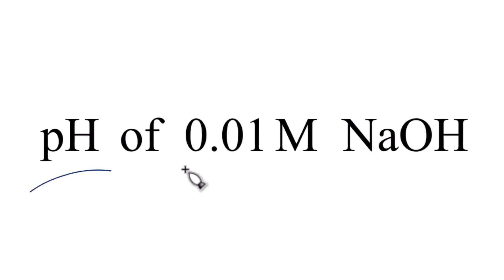Let's find the pH of a 0.01 molar solution of sodium hydroxide. So the first thing to recognize when you have NaOH sodium, that's going to have a 1 plus ionic charge.